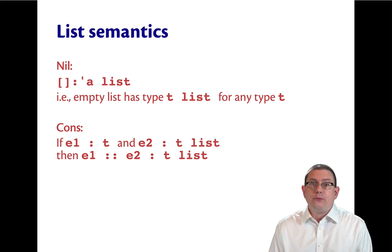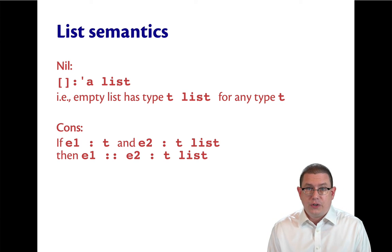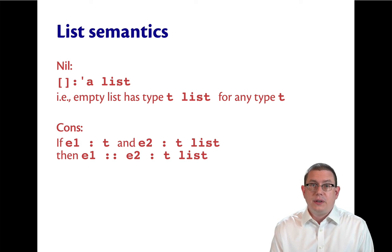And since we're left with a list at the end of the day, just with a new element on the front of it, the type of the list is not going to change. So E1 cons E2 is going to have the same type as E2, which is whatever T list was for E2.